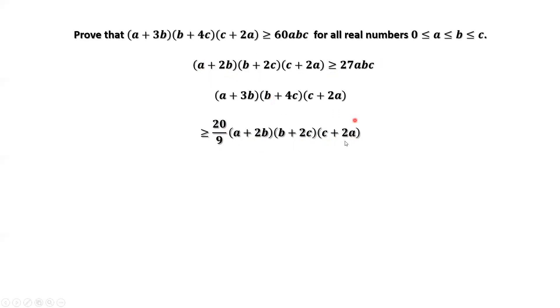Replace this part by 27abc, which is greater than or equal to (20/9) times 27abc, which equals 60abc. Therefore, (a + 3b)(b + 4c)(c + 2a) is greater than or equal to 60abc.